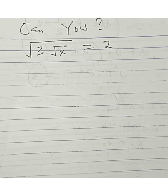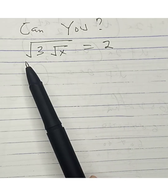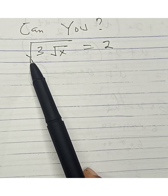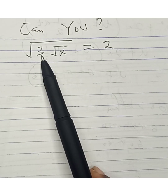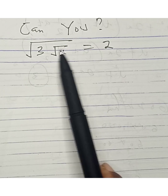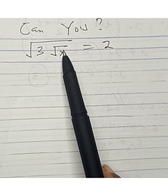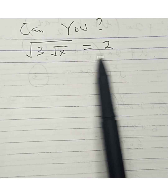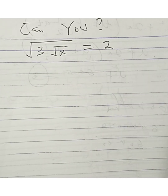Hello friends, welcome. We are asked to solve this olympiad math problem: the square root of 3 times the square root of x equals 2. So we are asked to solve this question.